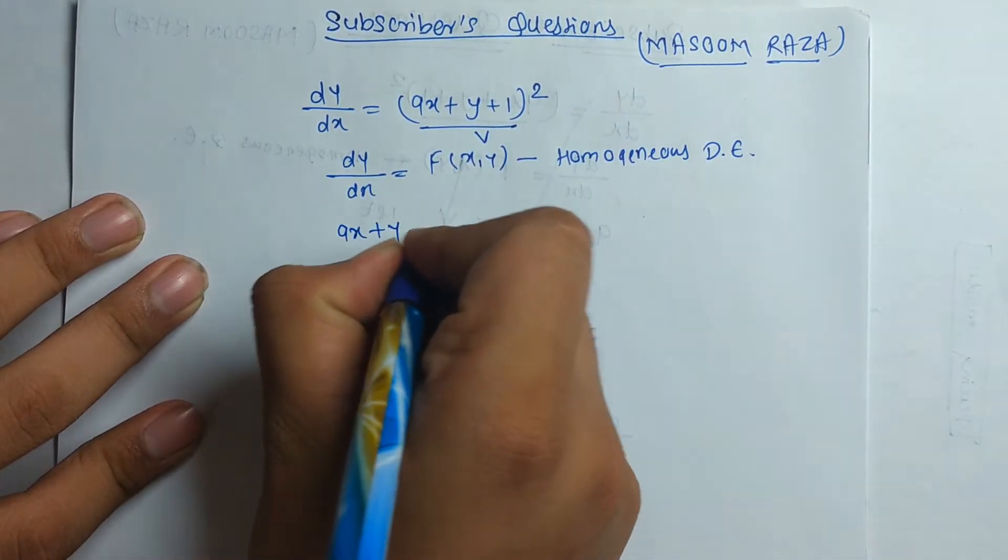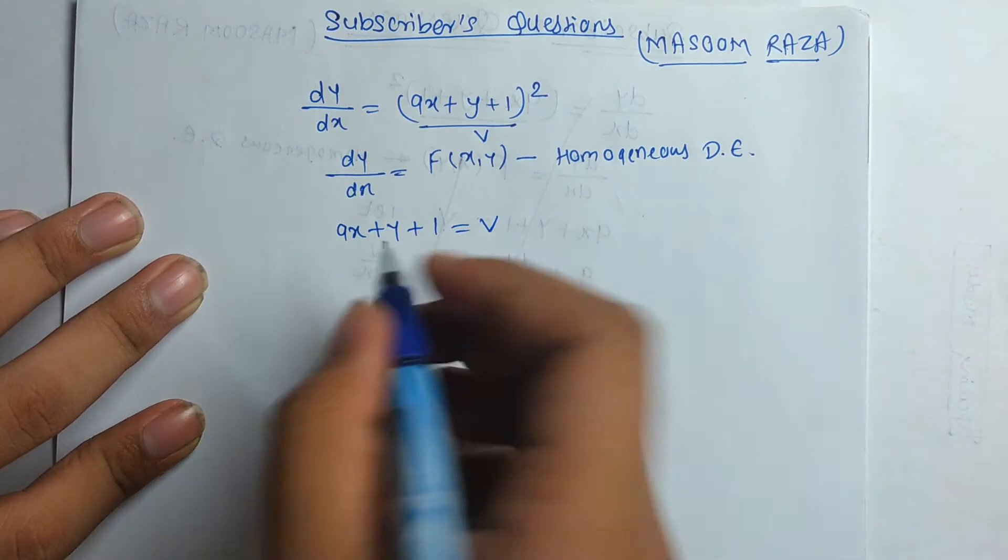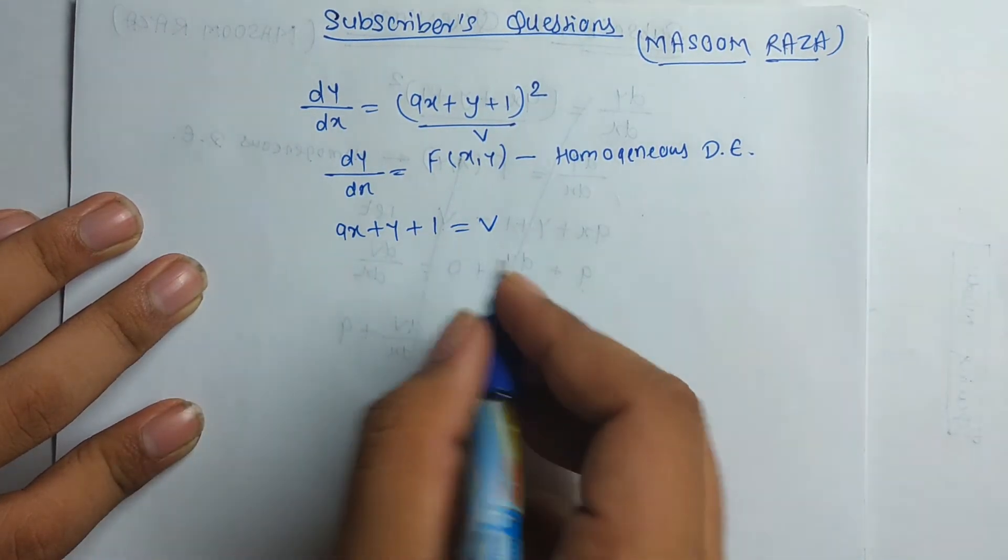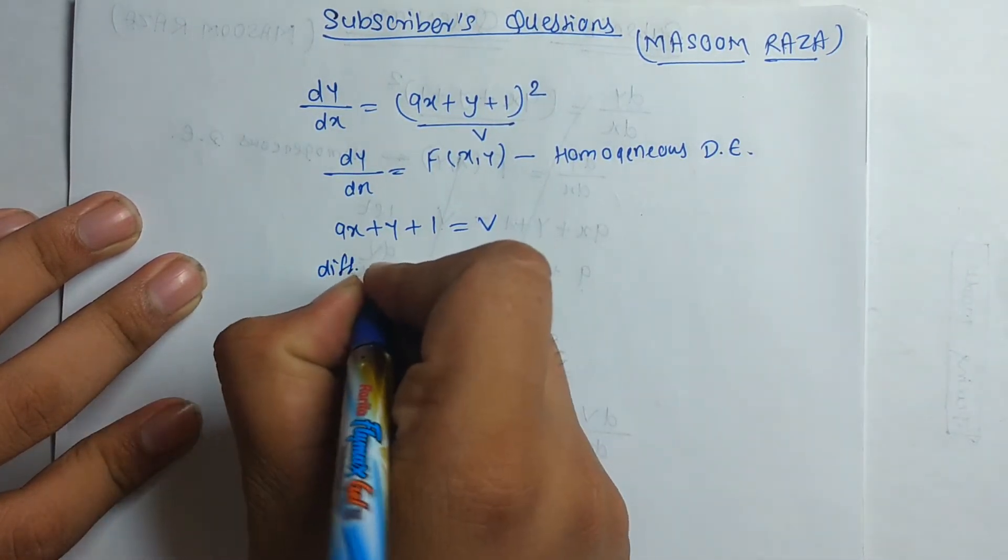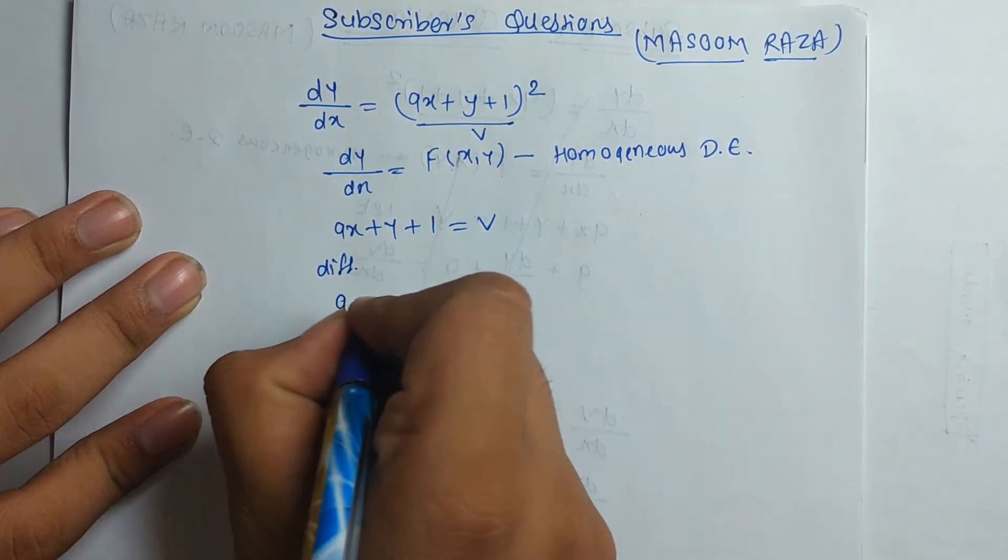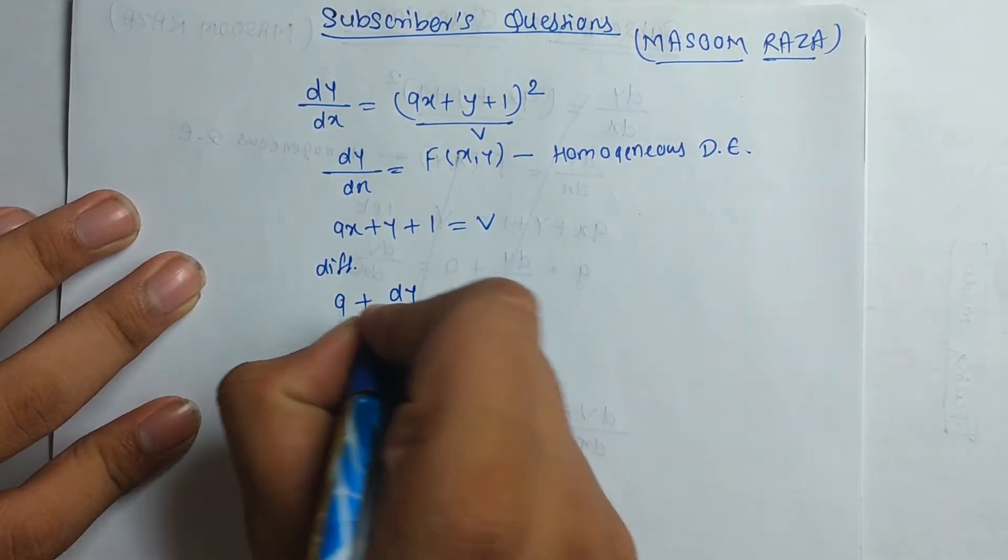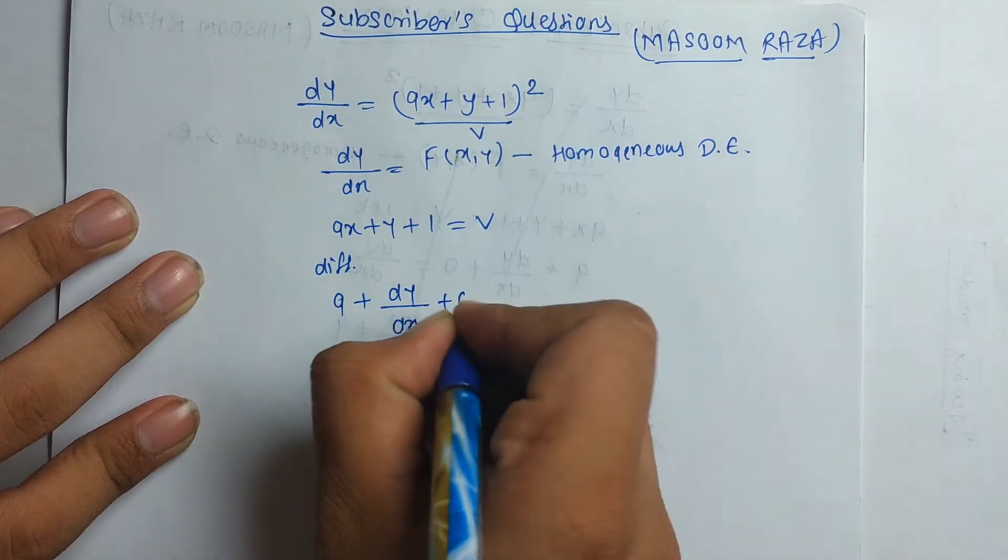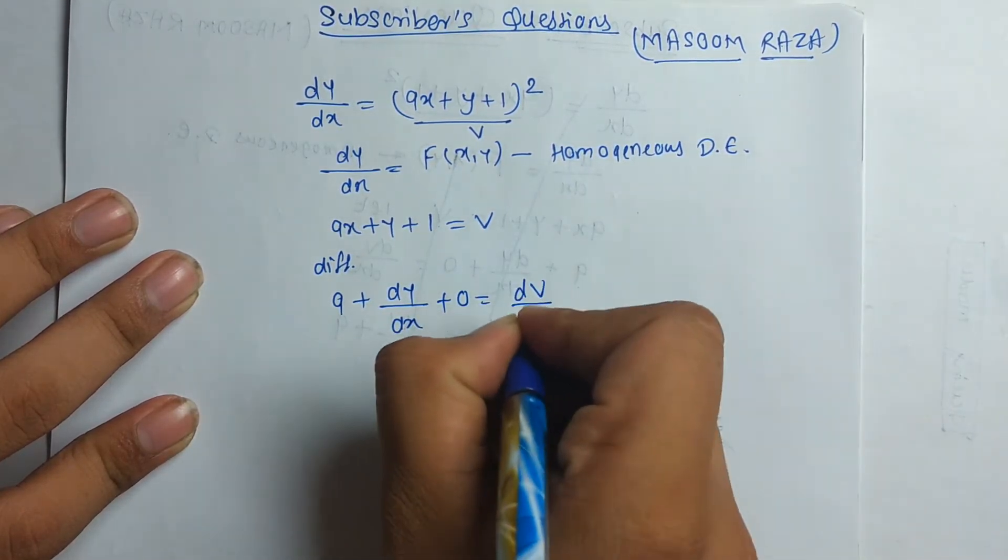Here 9x plus y plus 1 equal to v. Now, we have to differentiate this equation. Differentiate. That gives us 9 plus dy by dx plus 0 equal to dv by dx.